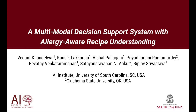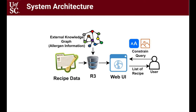With that, I present the system: a multi-modal decision support system with allergy-aware recipe understanding. Coming on to the system architecture, the input is the text document of the recipe and external knowledge related to different ingredients and their allergen category. We enrich the textual record into a rich recipe representation format, which enhances and improves the performance of the information retrieval system. The system is a simple web-based interface that supports multi-modal constraint-based queries on 25 unique recipes.